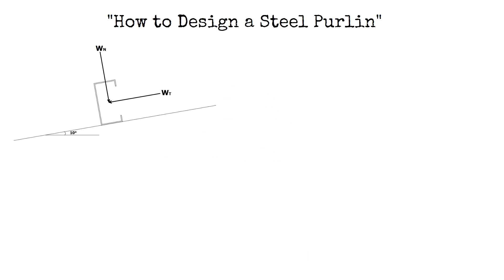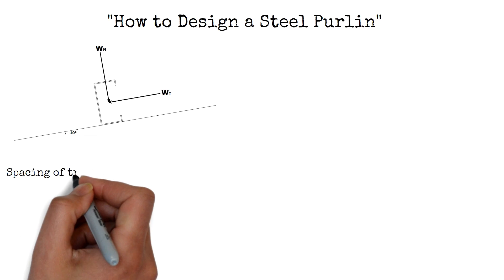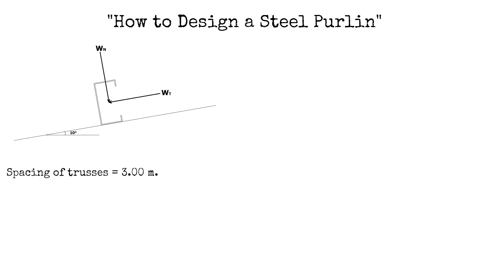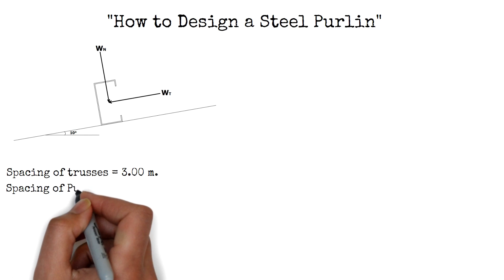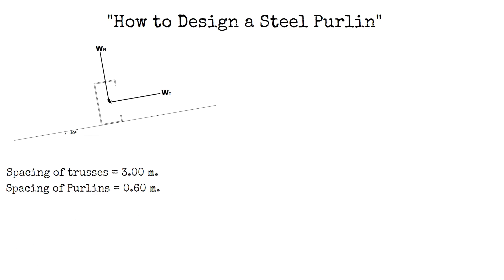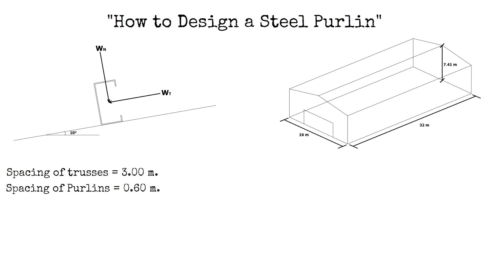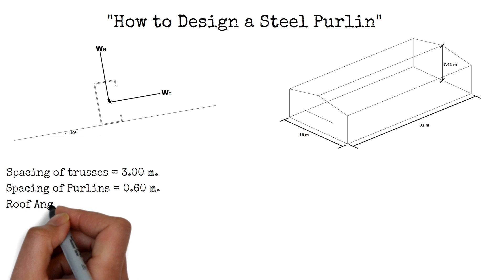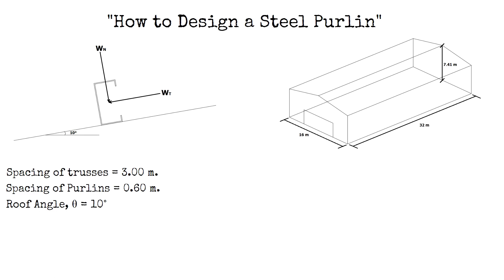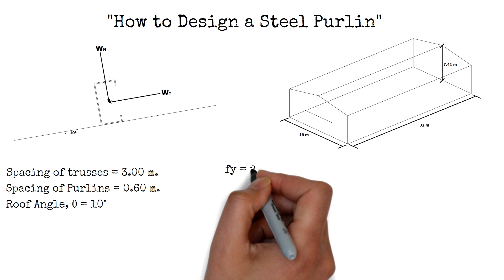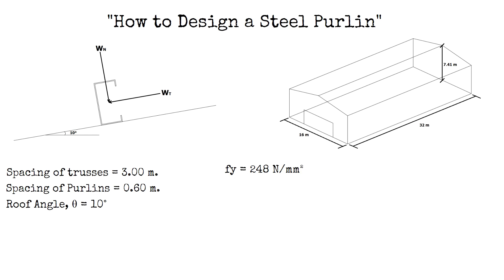All given data are as follows. The spacing between trusses is 3 meters. The spacing of purlins is 0.6 meter. The height of the building is 7.41 meters, the width is 16 meters, and the length is 32 meters. The roof angle, theta, is equal to 10 degrees. And we will be using steel grade 36 KSI, or 248 N per square millimeter, as the steel yield strength FY.